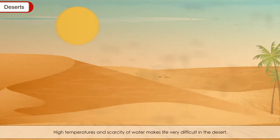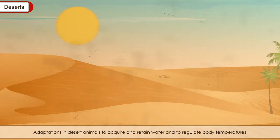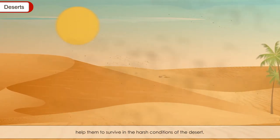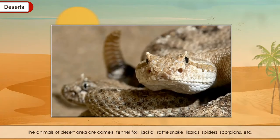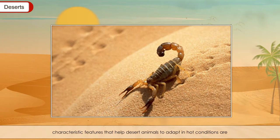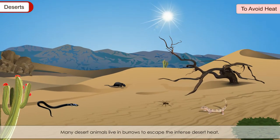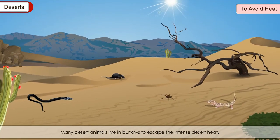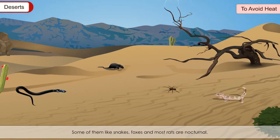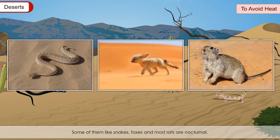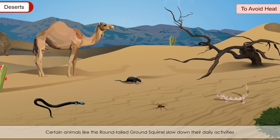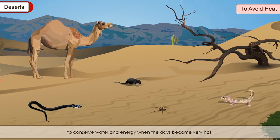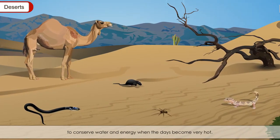High temperatures and scarcity of water make life very difficult in the desert. Adaptations in desert animals to acquire and retain water and to regulate body temperatures help them survive in the harsh conditions. The animals of desert areas include camels, fennec fox, jackal, rattlesnake, lizards, spiders, scorpions, etc. To avoid heat, many desert animals live in burrows to escape the intense desert heat. They come out during early morning or in the evening. Some, like snakes, foxes and most rats, are nocturnal — they sleep during the daytime in their burrows or dens and hunt only during the night when the temperature is low. Certain animals, like the round-tailed ground squirrel, slow down daily activities to conserve water and energy when the days become very hot.